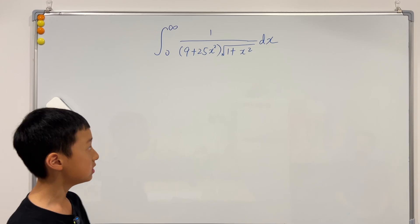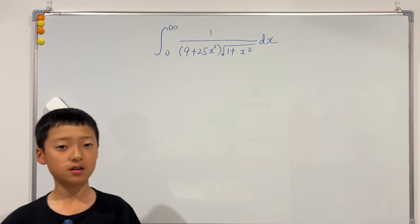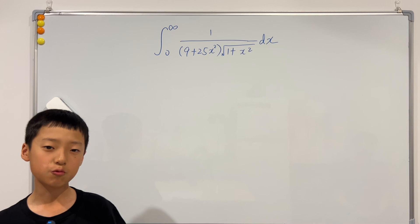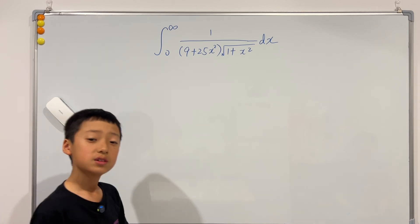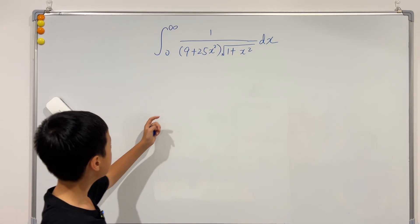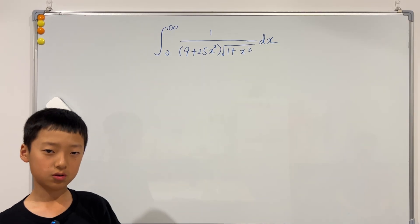First reason is that 1 plus tangent squared is equal to sec squared, and if we square root it becomes just sec. And second of all, this is valid because look at the bounds. It's from 0 to infinity.